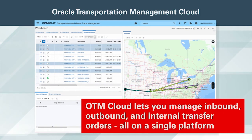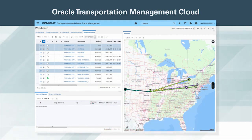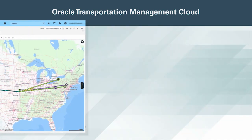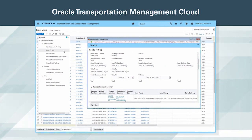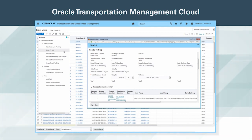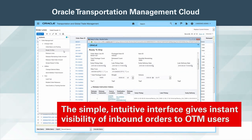OTM Cloud lets you manage inbound, outbound, and internal transfer orders, all on a single platform. The product's native web services enable you to easily integrate OTM with virtually any enterprise resource planning or ERP system. Oracle Transportation Management Cloud enables you to allow suppliers to generate transportation orders from existing purchase orders, default order information from the PO, and make changes as needed. The simple, intuitive interface gives instant visibility of inbound orders to OTM users.